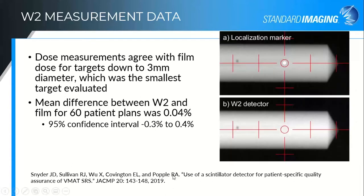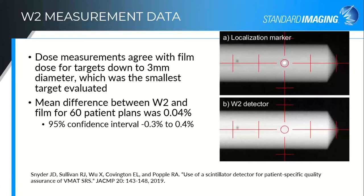Another publication from Richard Popple's group at the University of Alabama at Birmingham looked at patient target measurements to see how small a target they could measure accurately with the W2 comparing it with film. They looked at targets down to a three millimeter diameter and got excellent agreement between the film and the W2, and actually lower variation between measurements — lower uncertainty with the W2 compared with film. The images shown also indicate water equivalence — you can't see where the W2 scintillator is within the chamber plug. We do provide a BB marker fiber, a dummy fiber, so you can localize it with your imaging system and make sure you're aligned properly before treating your phantom plan or doing small field measurements.